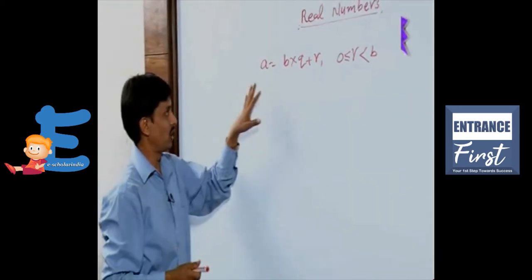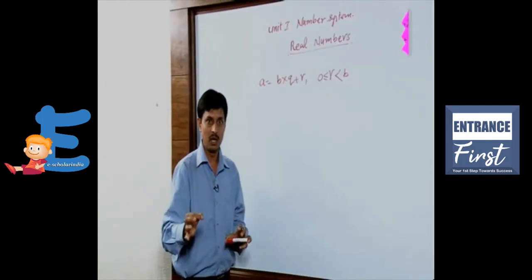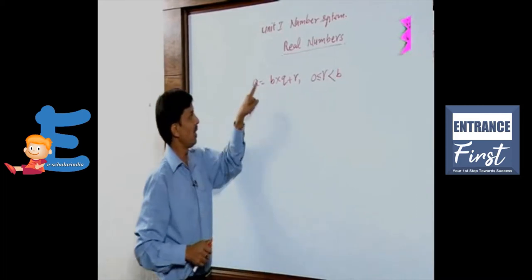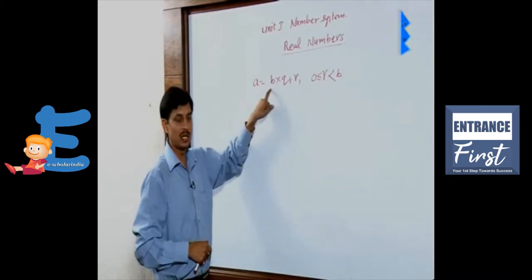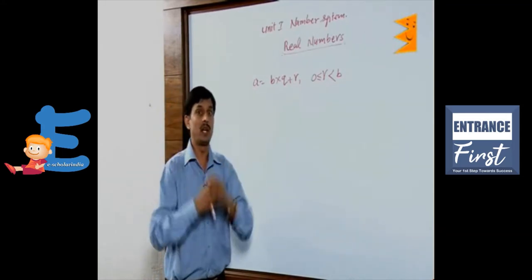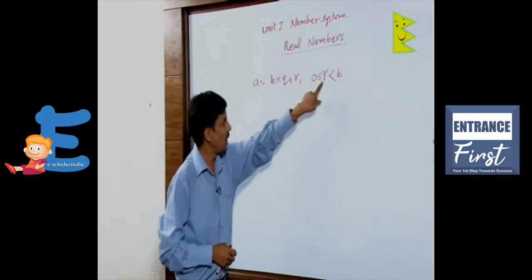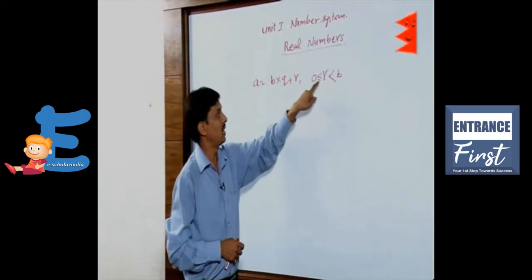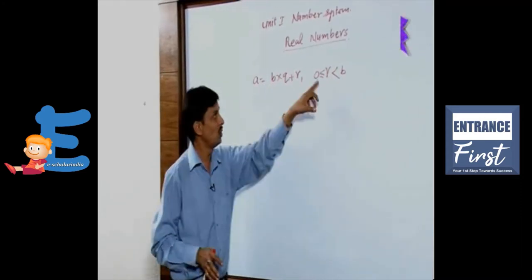This equation and this result is known as Euclid's Division Lemma, where A and B are both positive integers. Then there exist two separate numbers Q and R, where the value of R is mandatorily less than B but greater than or equal to zero.